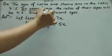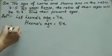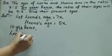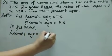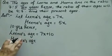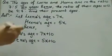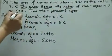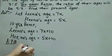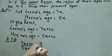Ten years hence means 10 years later. Lina's age will be 7X plus 10 and Hina's age is 5X plus 10, right? 10 years later, their ages ratio is given as 9:7. So according to the question, the ratio (7X plus 10) over (5X plus 10) equals 9 over 7.